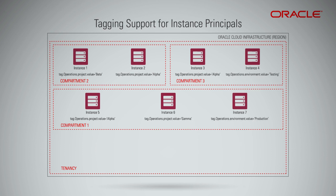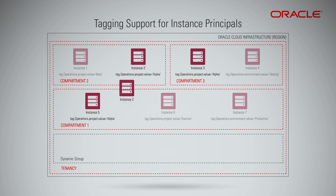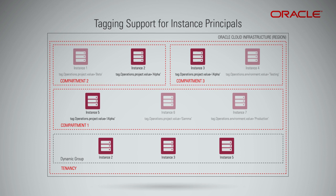Similarly, say you want to group all instances tagged with the tag namespace called 'operations', tag key called 'project', and tag value called 'alpha'. For that, you must enter the API parameter matching rule tag.operations.project.value equals alpha. All instances that currently exist or get created with the tag namespace 'operations', tag key 'project', and tag value 'alpha' are members of this group.